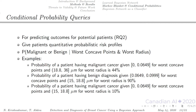From our learned Bayesian network, we were able to perform conditional probability queries to predict outcomes for potential patients, giving patients a quantitative probabilistic risk profile. We look at the probability of an event — malignant or benign — given the intervals of the parent features. Here are a few examples. Looking at the first example, the probability of a patient having malignant cancer given 0 to 0.0649 for worst concave points and 18.8 to 36 micrometers for worst radius is 44%.